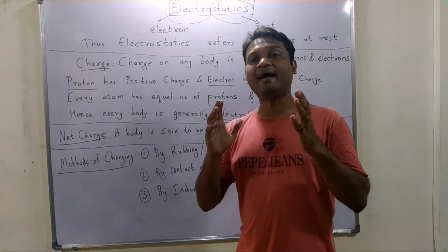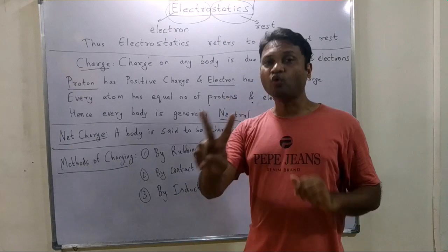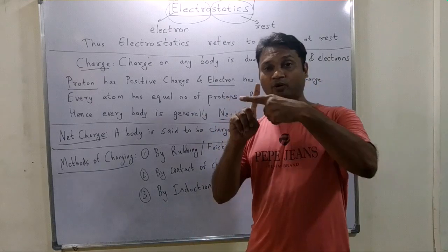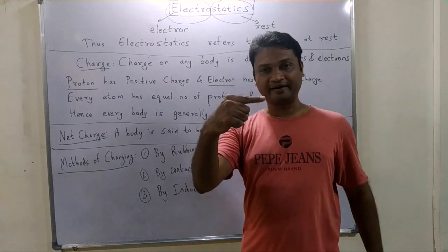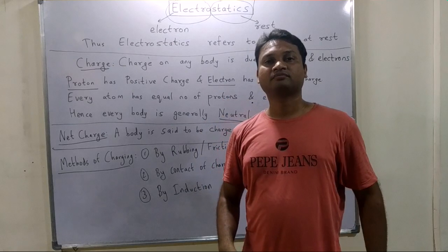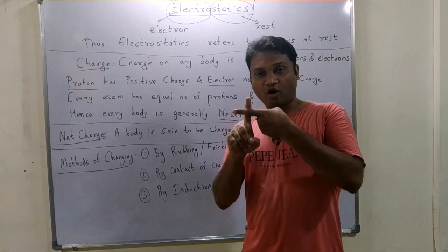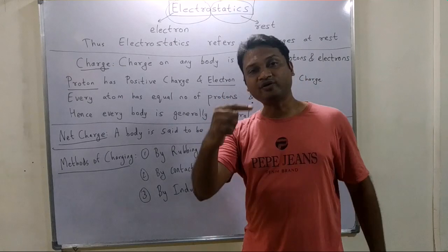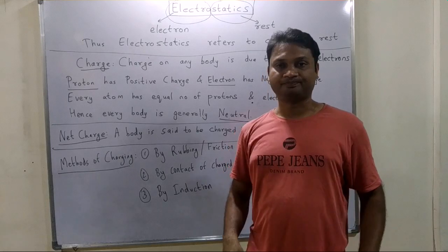What do we mean by charge? There are two types of charges: positive charge and negative charge. Positive charge occurs on protons, and negative charge occurs on electrons.